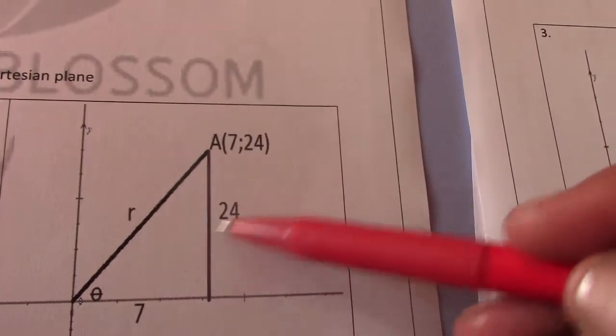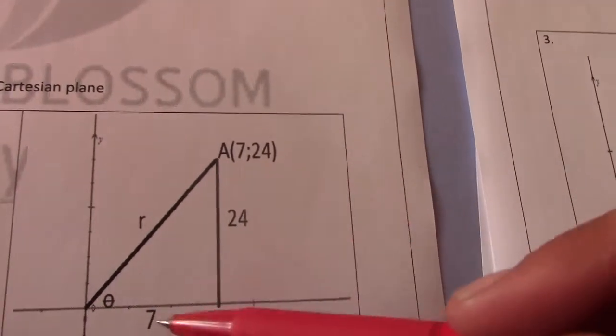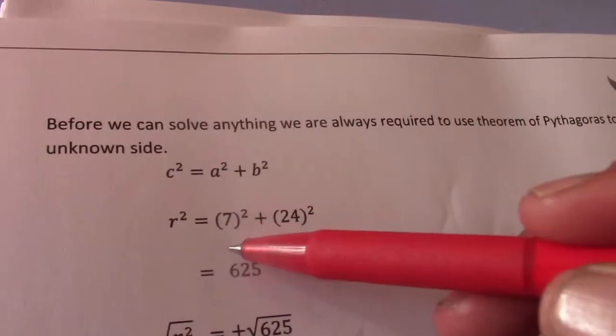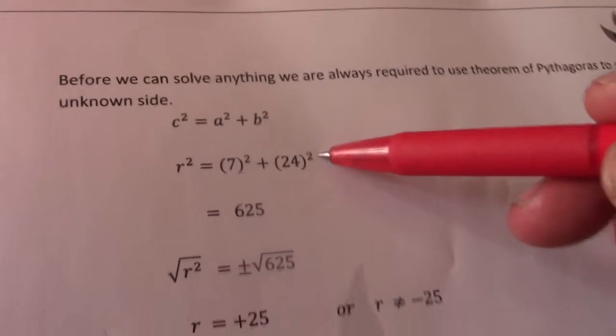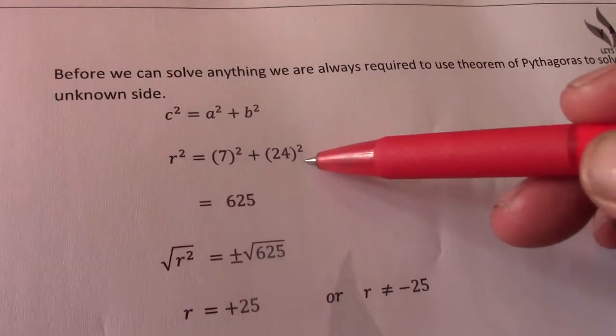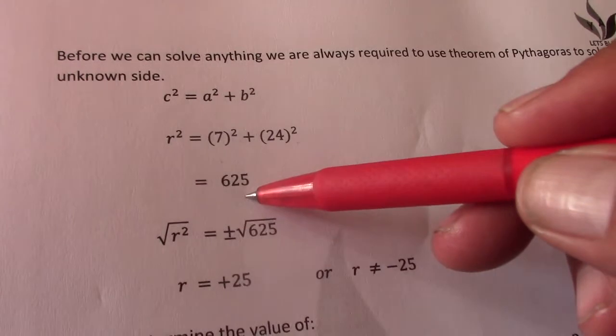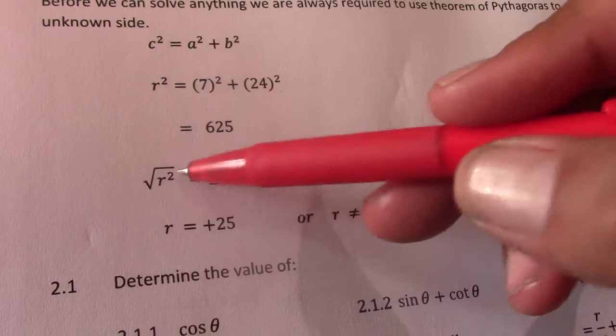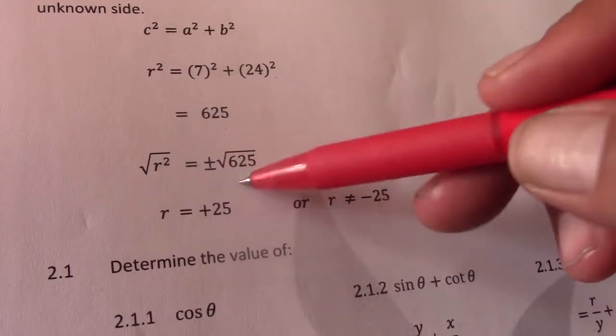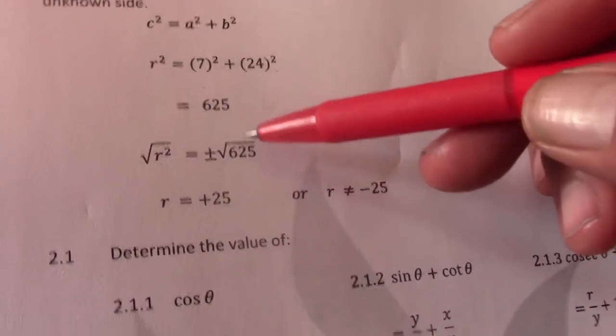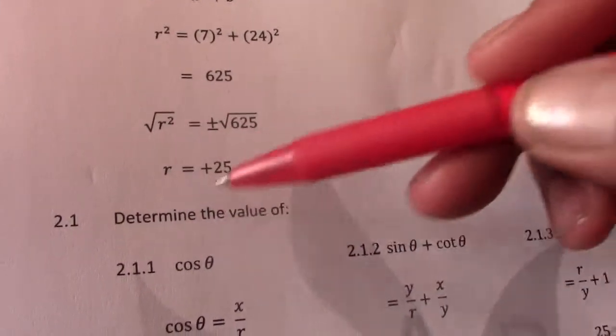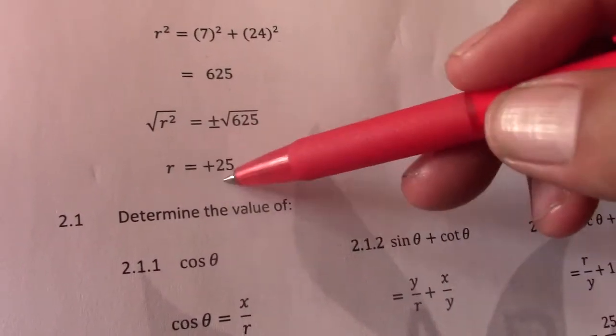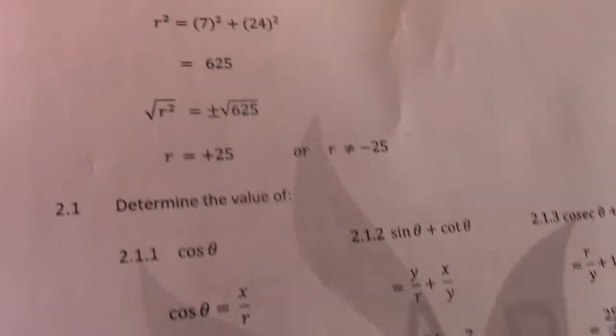So using the theorem of Pythagoras the longer side R squared will always equal that one squared plus that one squared. So then R squared equals 7 squared plus 24 squared which then gives me 49 plus 576 which becomes 625. So to get R squared to R I say square root R squared. To one side I have to do the other side it becomes plus or minus square root 625. Now take note R or my hypotenuse is always a positive value. So that equals plus 25 then can't equal minus 25.